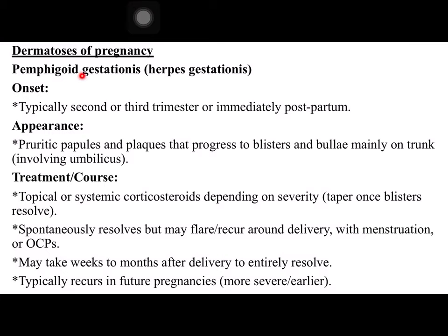The first one is pemphigoid gestationis, also called herpes gestationis. This disorder is considered the same entity as bullous pemphigoid occurring during pregnancy. Its onset — it is important to know the onset of every dermatosis — is typically in late pregnancy, such as the second or third trimester, or immediately postpartum.